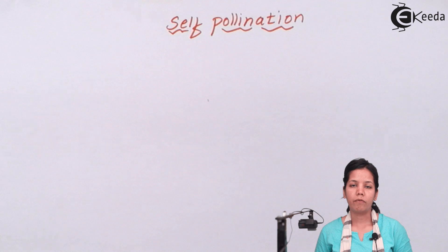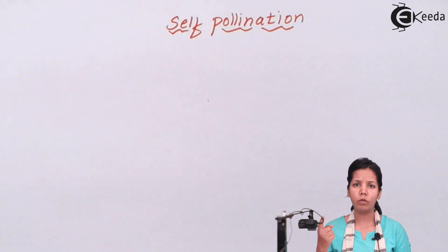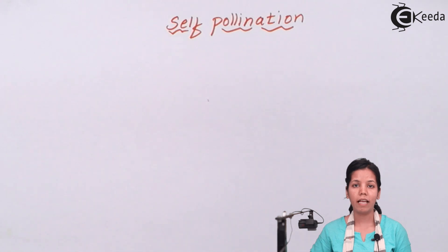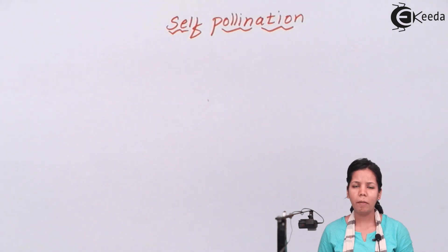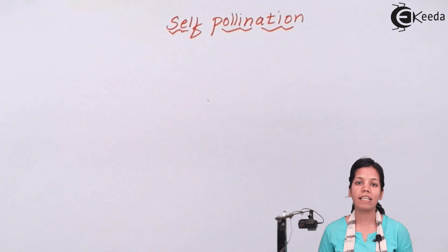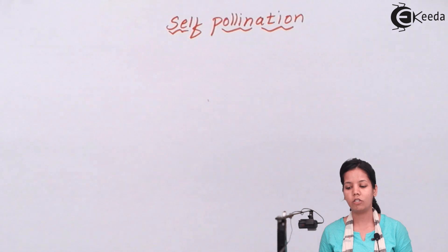Whereas if the pollination is taking place between two flowers which are of the same species — for example, two different hibiscus plants, both the same species — and both hibiscus are present at different positions on the same plant, it is called geitonogamy. Remember: in self-pollination, the flowers have to be present on the same plant, whether it is autogamy or geitonogamy.